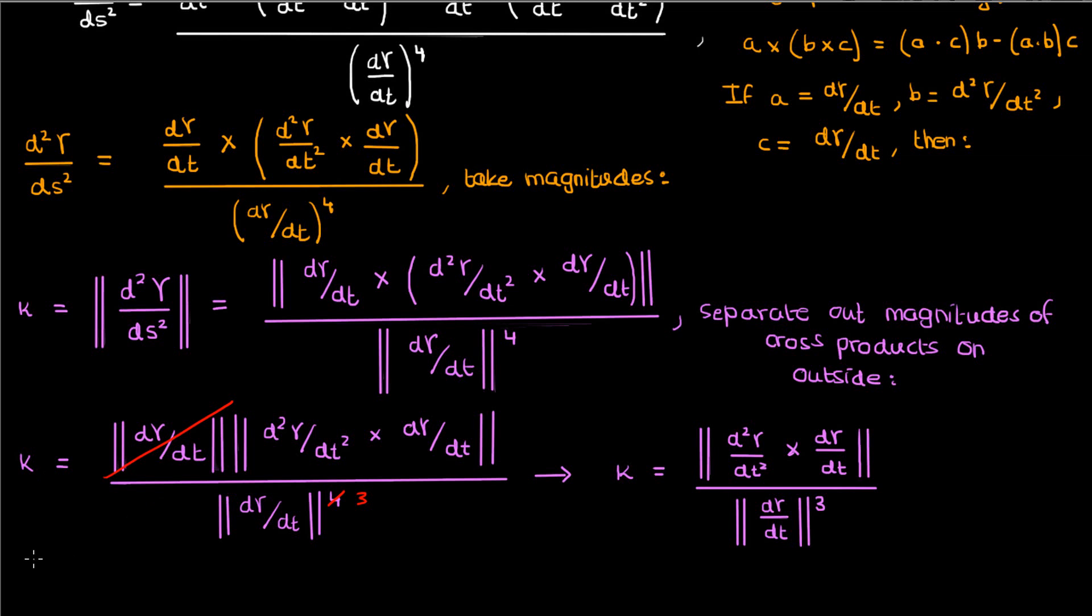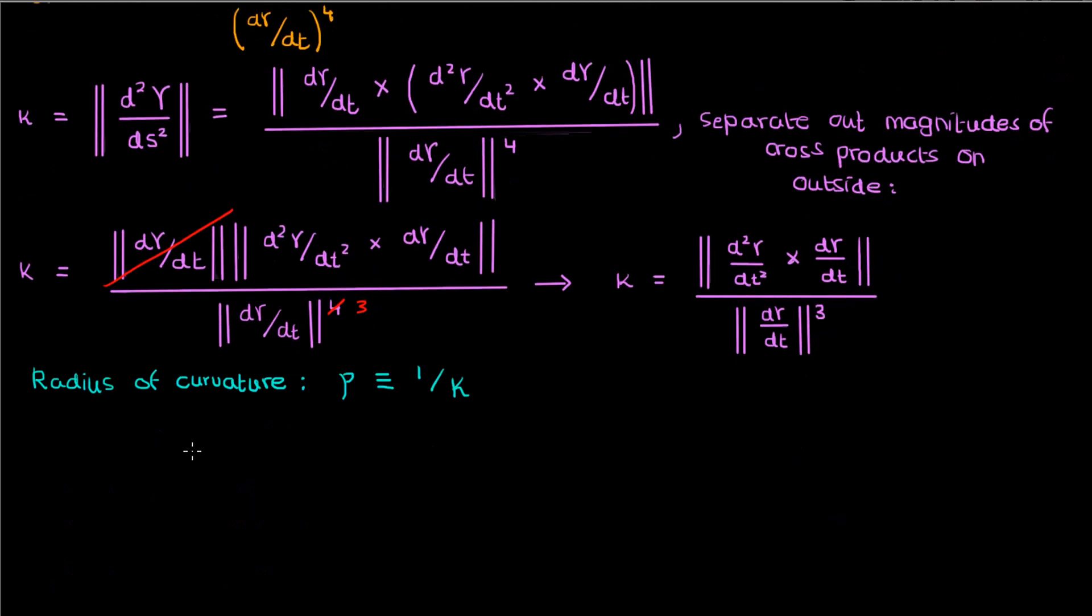Another quick concept I'll introduce here is the idea of radius of curvature. Simply put the radius of curvature which I'll call ρ is 1 over the curvature κ. This makes sense. A circle with a smaller radius curves more over the same distance than a circle with a larger radius as I've shown in these two examples here. In other words, a circle of smaller radius has greater curvature than a circle of larger radius.